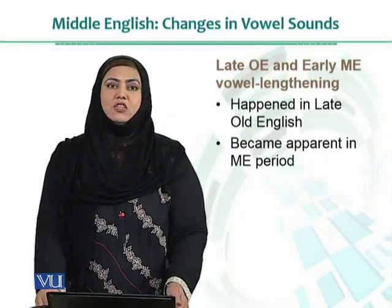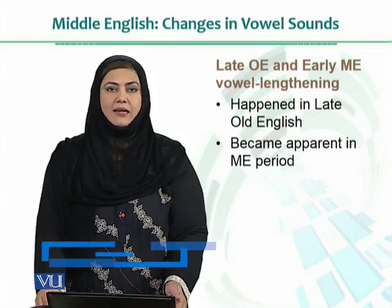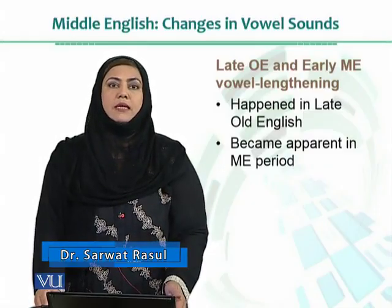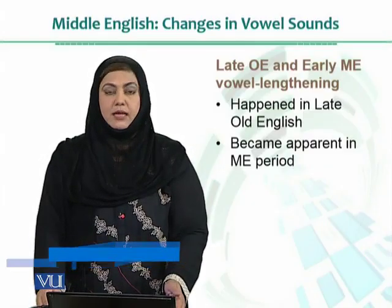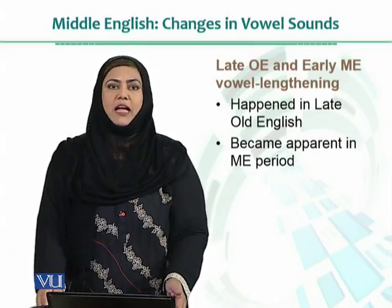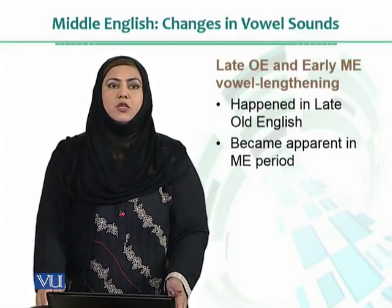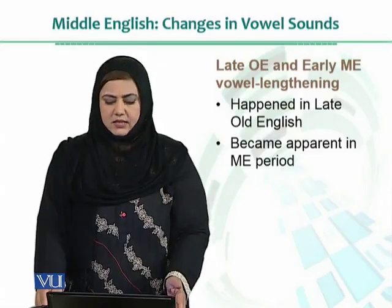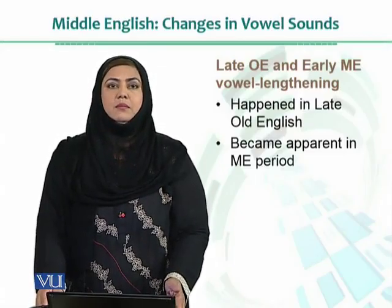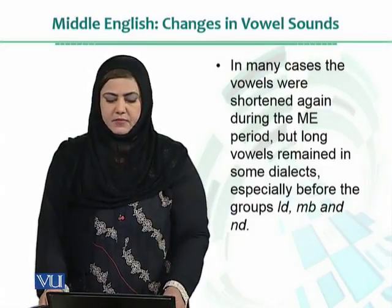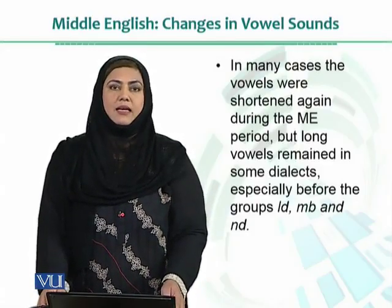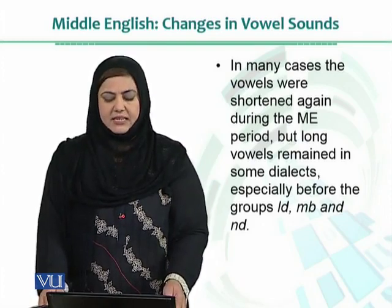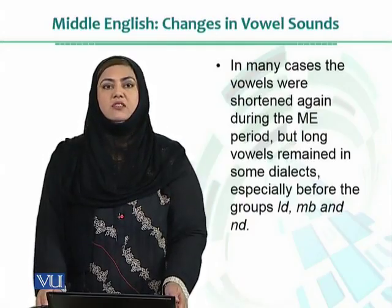When we compare Old English and Early Middle English, what we notice is that there is a feature that is shared, and that is the lengthening of vowel sounds. In fact, lengthening of vowel sounds happened during the later period towards the end of Old English. However, it did not become apparent until the Early Middle English period started. In many cases, the vowels were shortened again during the Middle English period, but long vowels remained in some dialects, especially before certain combinations of consonants.